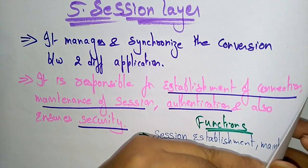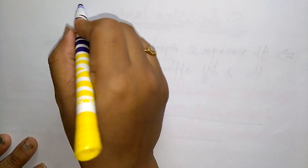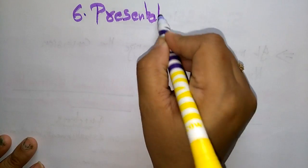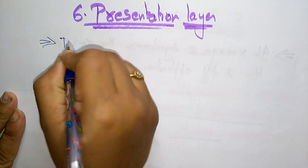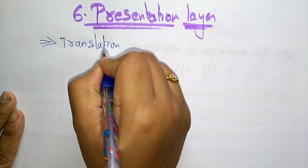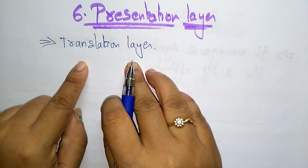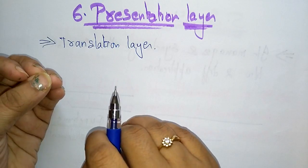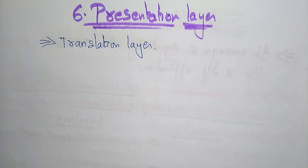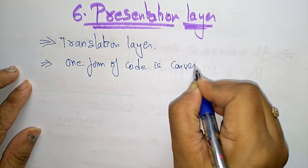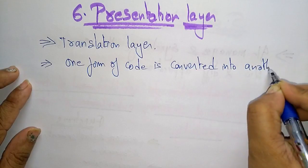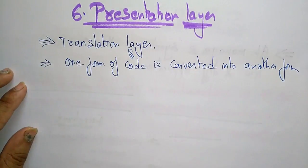Now let us see the next layer, that is the 6th layer — the presentation layer. The presentation layer is also called the translation layer. Why do we call it a translation layer? Because it converts whatever message the application is sending into an encrypted form, meaning one form of code is converted into another form.